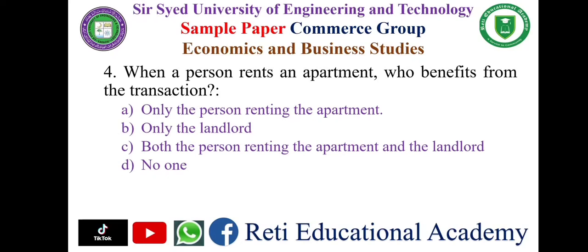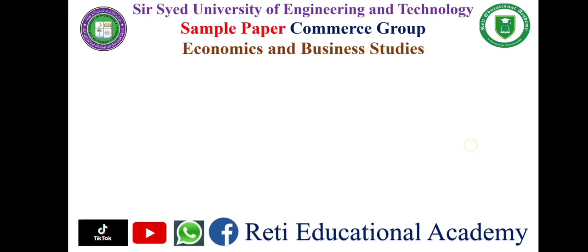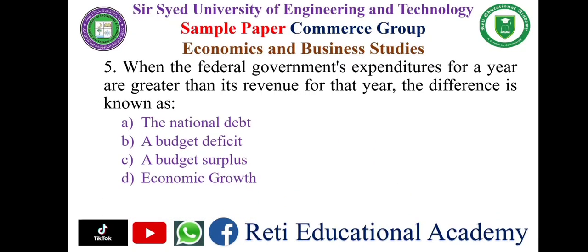Question number four: When a person rents an apartment, who benefits from the transaction? A) only the person renting the apartment, B) only the landlord, C) both the person renting the apartment and the landlord, D) no one. The correct answer is C, both the person renting the apartment and the landlord.